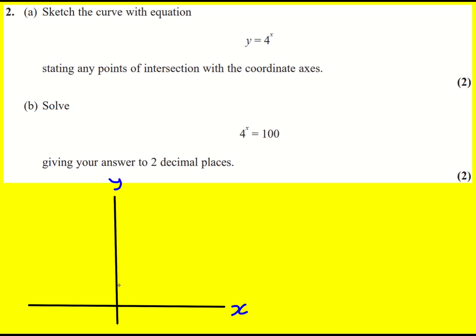They go through the y-axis at 1, and then actually it's going to be very small for negative values of x because it'd be like 4 to the minus 1 half and so on and it gets really big, so a little bit like this and let's label that as 1.